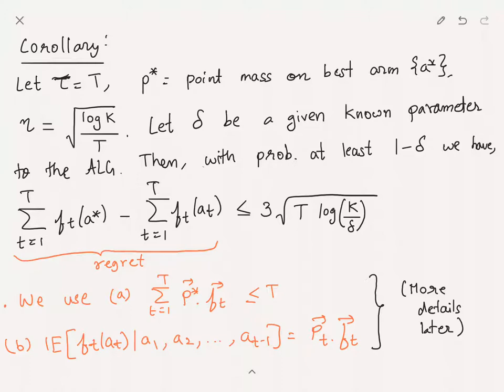Square root T turns out to be the optimal dependence on T, and it turns out that log k is also the optimal dependence on the number of actions. I would like you to pay attention and remember this log k dependence. We'll see once we go from full feedback to bandit feedback, we will lose this dependence on the number of actions as log. In fact it's just going to be sqrt(kT) later. Notice that the dependence on number of actions is only logarithmic, so you can have exponentially many actions and still be good because the regret is still bounded polynomially.